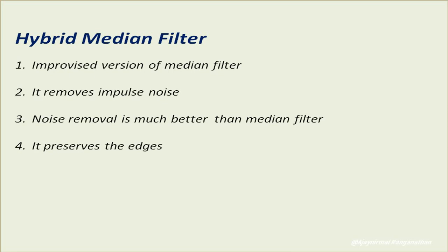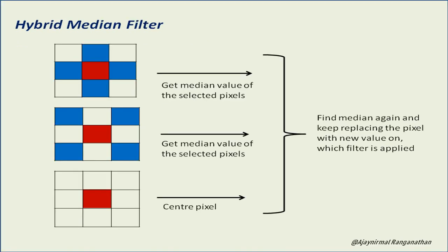Here we will see how it works. Hybrid median filter uses a window — also called a filter — containing a plus symbol pattern, an x symbol pattern, and a center pixel. These are the pixels which have to be selected.